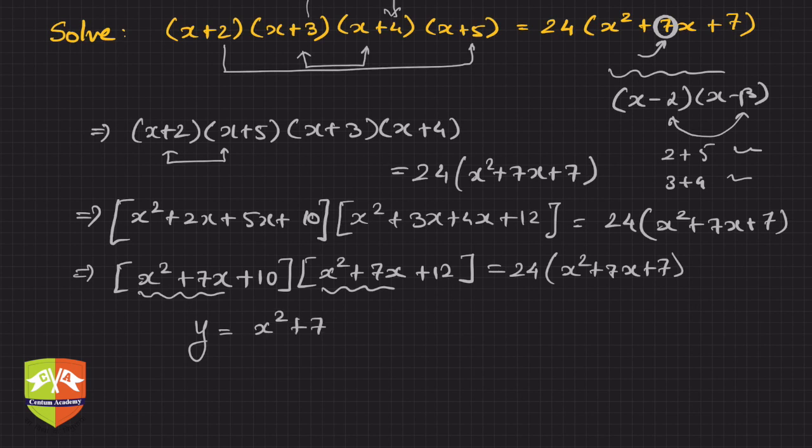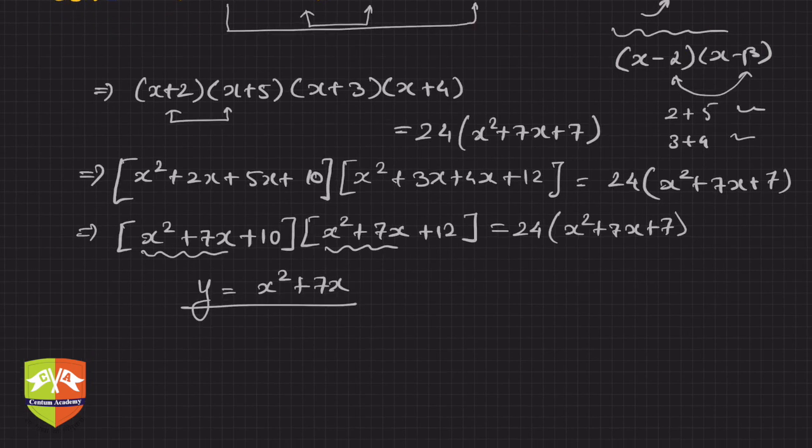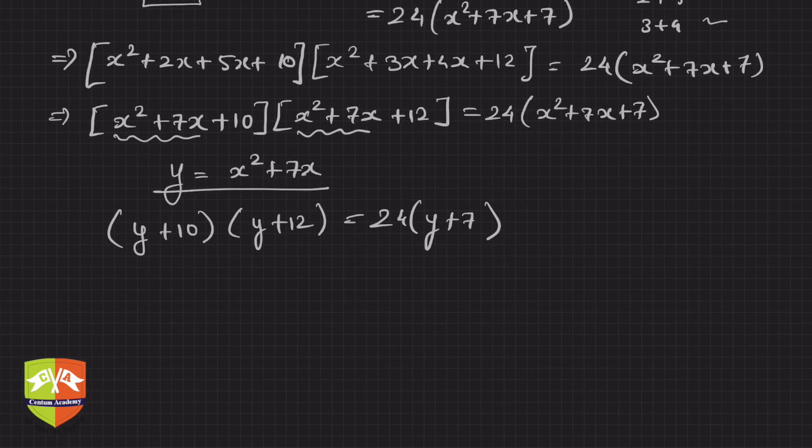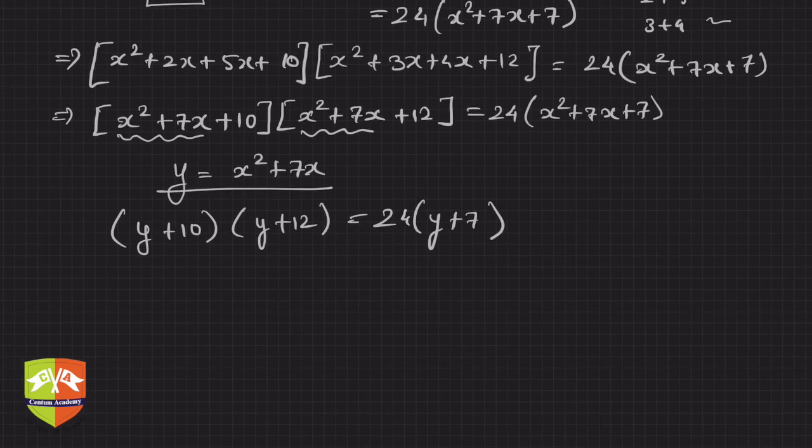What can I do? I can say let y be equal to x²+7x, and then reduce this into this form: (y+10)(y+12) is equal to 24(y+7). Now this is within our reach. We will be able to solve such equations.